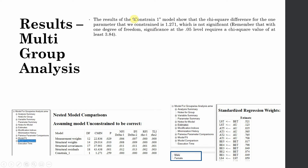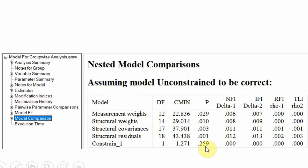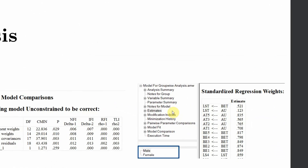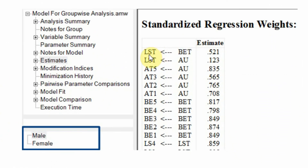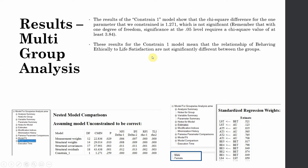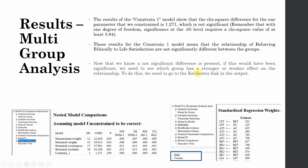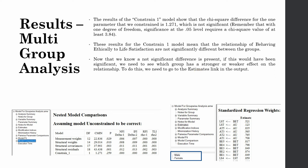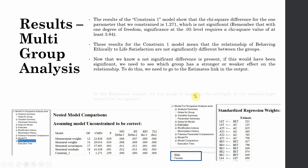Moving on — the results for constraint one in the model were insignificant, showing that there are no significant differences in the impact of behaving ethically on life satisfaction in male compared to female. But what if this were significant? We would further go and assess which relationship is stronger — is it stronger in male or stronger in female?